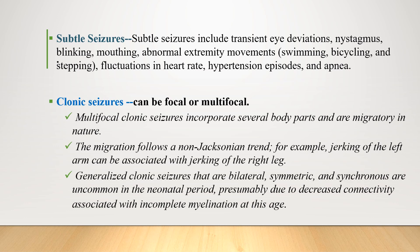Clonic seizures can be focal or multifocal. Multifocal clonic seizures incorporate several body parts and are migratory in nature, following a non-Jacksonian trend. For example, jerking of the left arm can be associated with jerking of the right arm. Generalized clonic seizures that are bilateral, symmetric, and synchronous are uncommon in the neonatal period due to decreased connectivity associated with incomplete myelination at this age.